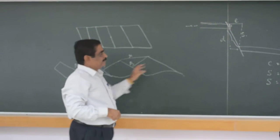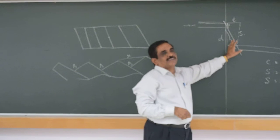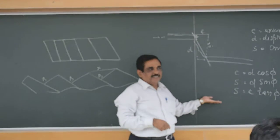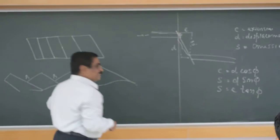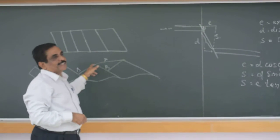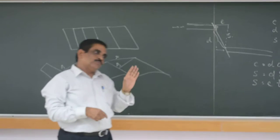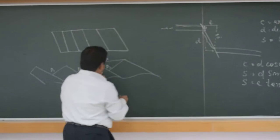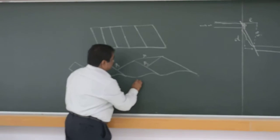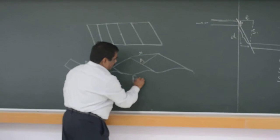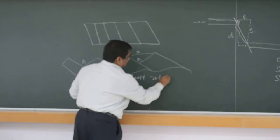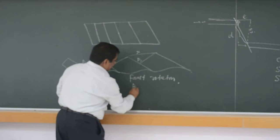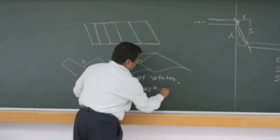This type of displacement just cannot occur because you have to create space below. Then only the displacement can occur. You are not creating space below, so you have to rotate. So, most of the normal faults are rotational faults. So, this rotation — what does it include? It includes fault rotation. The fault is rotating, as well as individual blocks are also rotating.